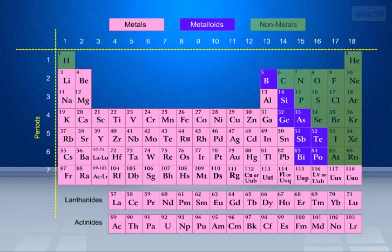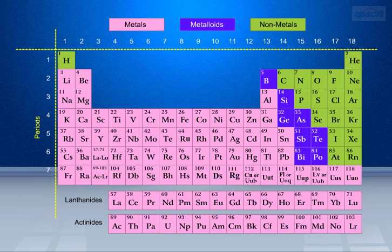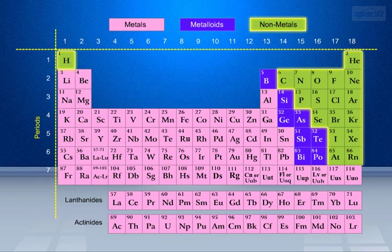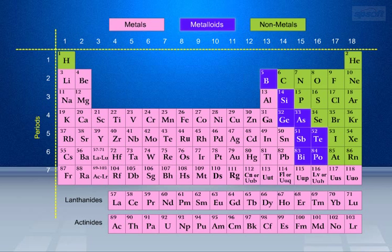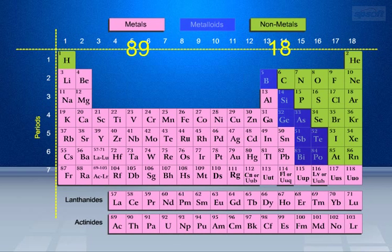We all know that there are around 114 chemical elements in the periodic table. These 114 elements are divided into 3 main groups based on chemical properties: Metals, Non-metals including noble gases, and Metalloids. In the periodic table, we have 89 metals and 18 non-metals including noble gases, as of the year 2006.